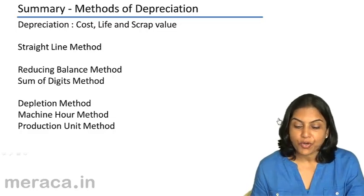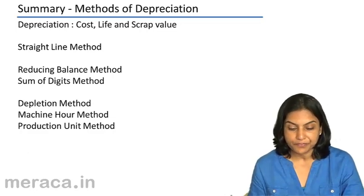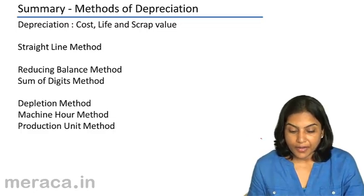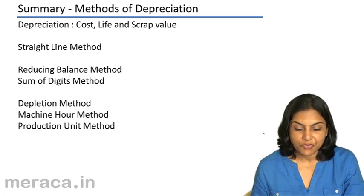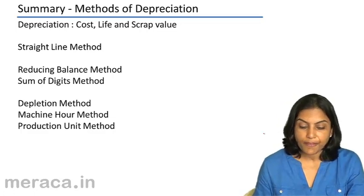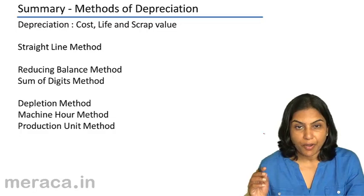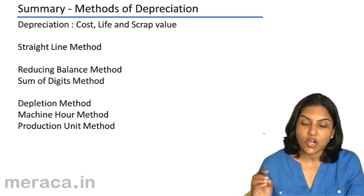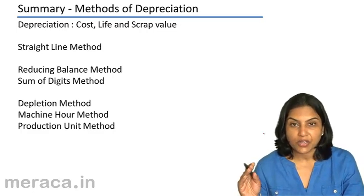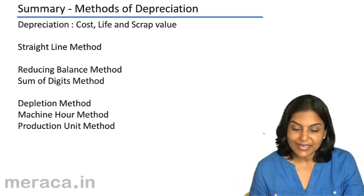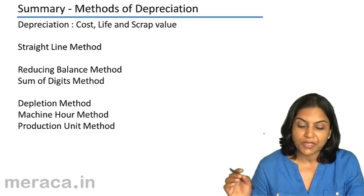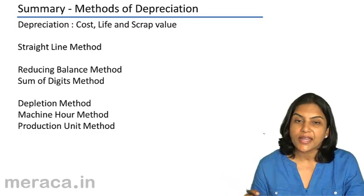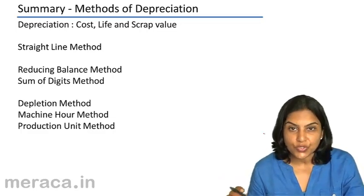A quick recap of what we have done so far on depreciation and the methods of depreciation. In order to compute or measure depreciation, the three factors required are: the cost of the asset, being all costs incurred until the asset can be put to use — including the purchase cost, loading cost, installation cost, and any other cost incurred to make it usable.